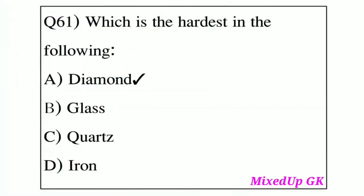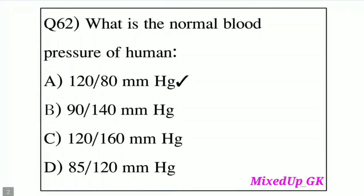Question number 61: Which is the hardest in the following? Option A: Diamond. Option B: Glass. Option C: Quartz. Option D: Iron. The answer is Option A, Diamond. Diamond is the hardest of all.